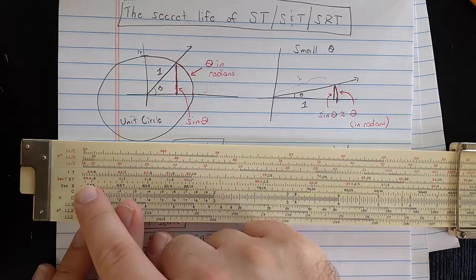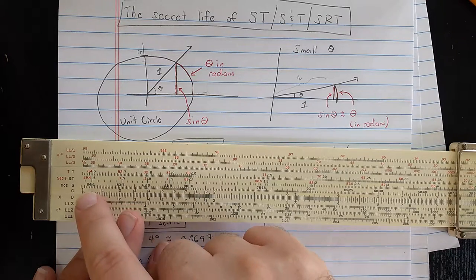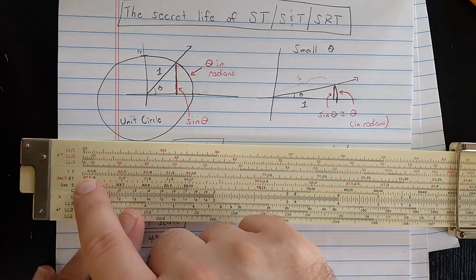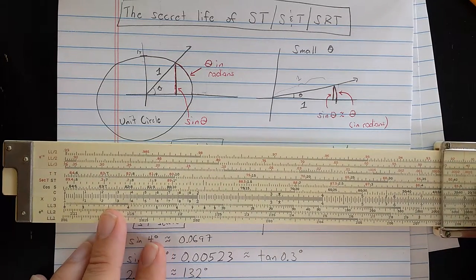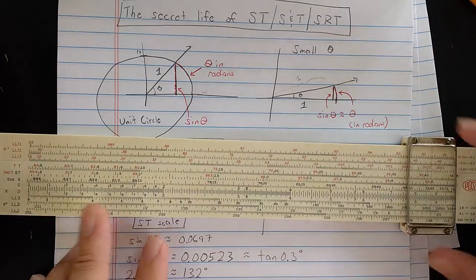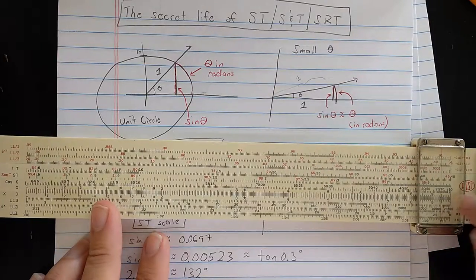One reason for this arrangement, as we know, is that the S scale and the T scale start at about angle 5.7, T scale going to angle 45 at the right index, and S scale going to angle 90 at the right index.